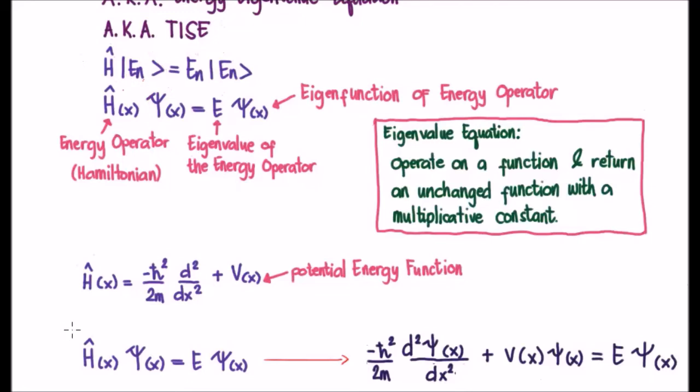On the bottom left of your screen we have the time independent Schrödinger equation again, this time using the wave function notation. Now what I've done is I've inserted the Hamiltonian operator.